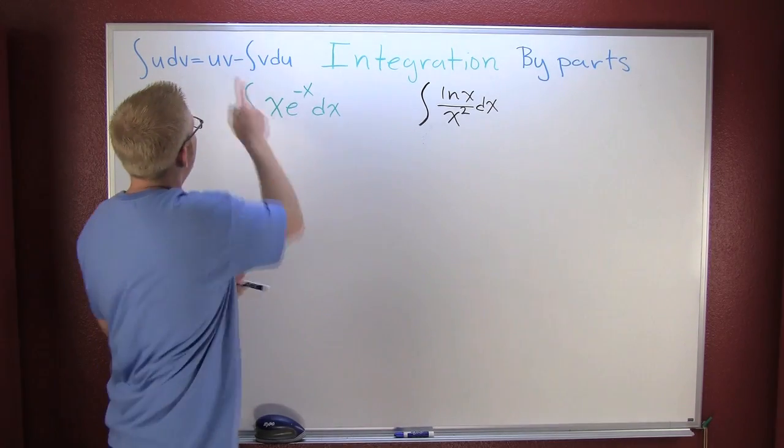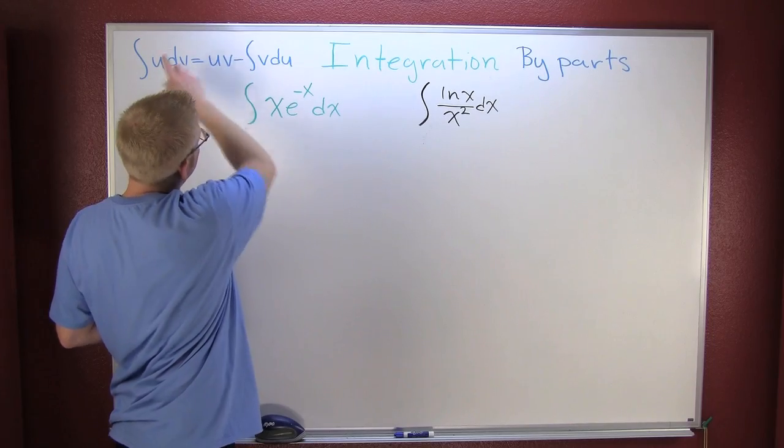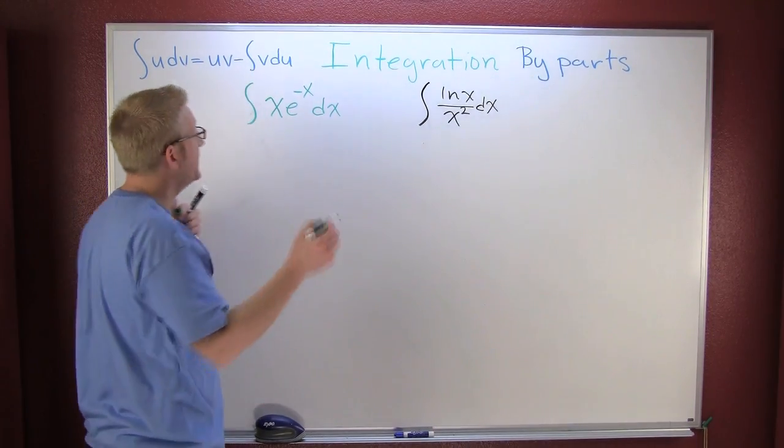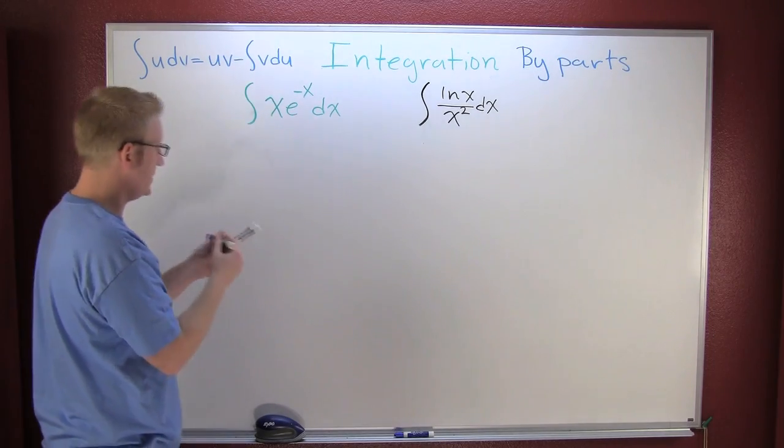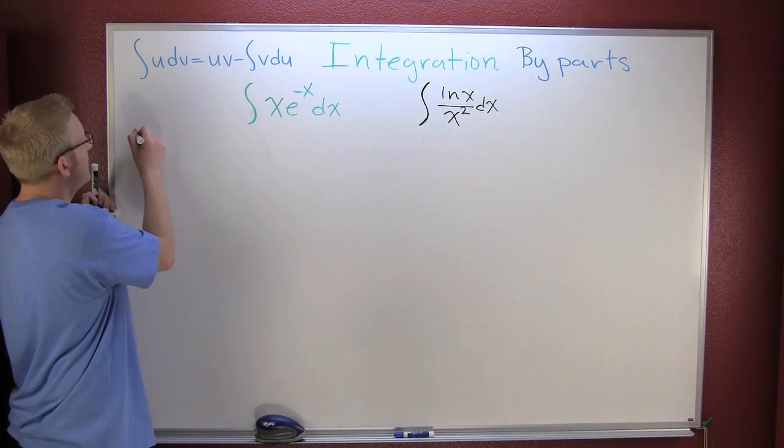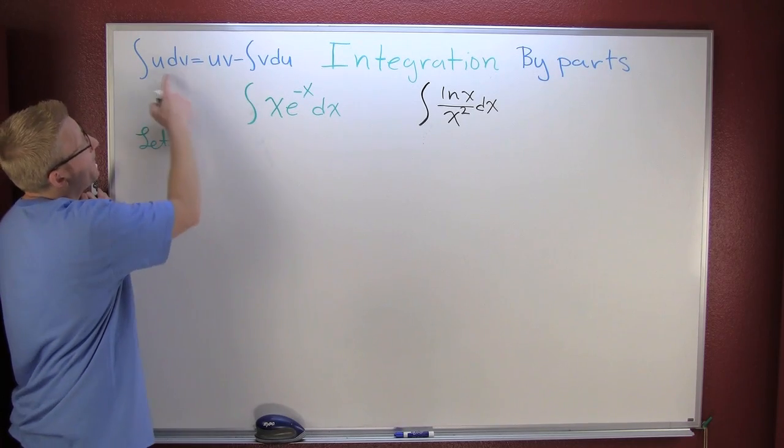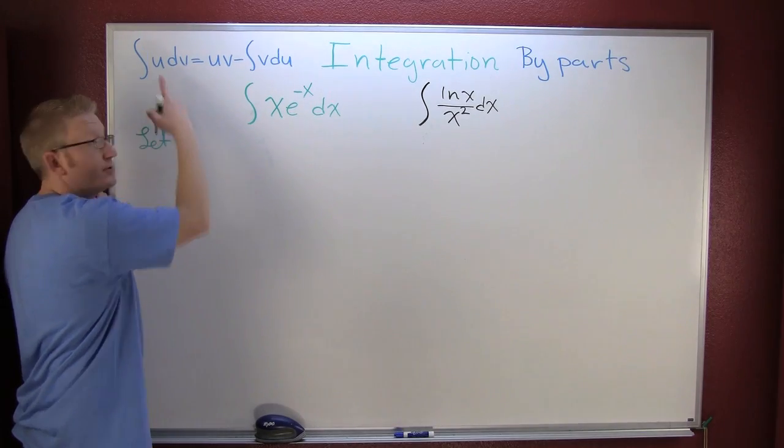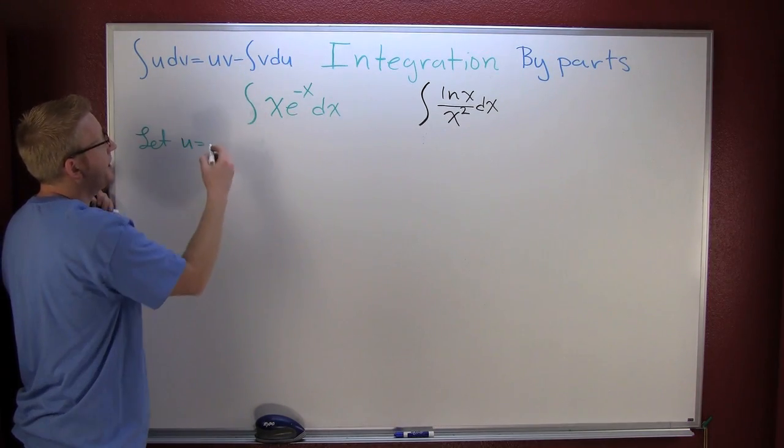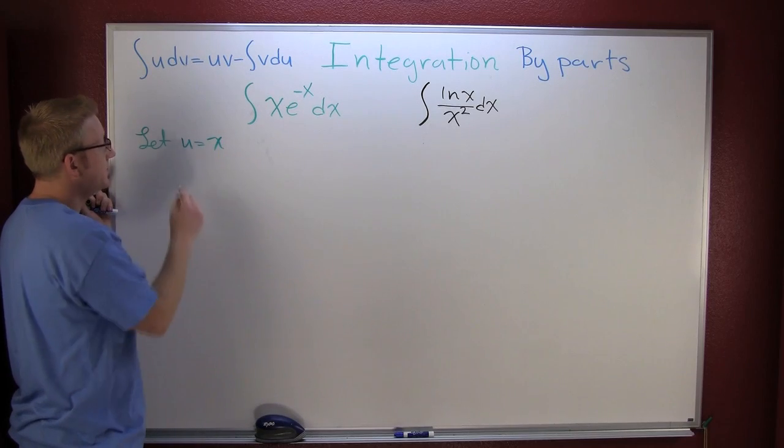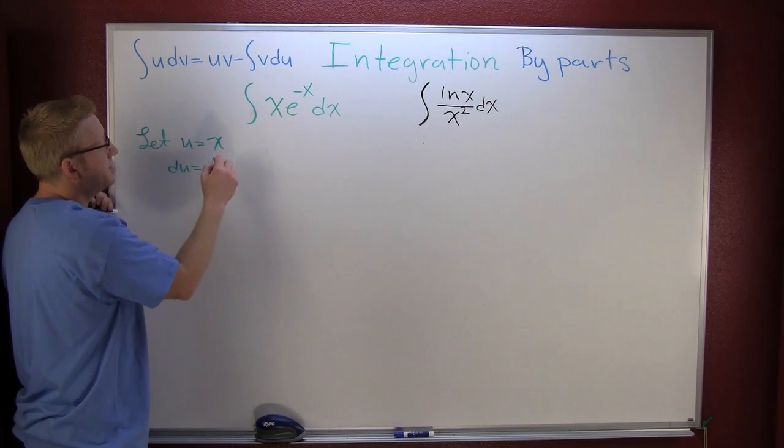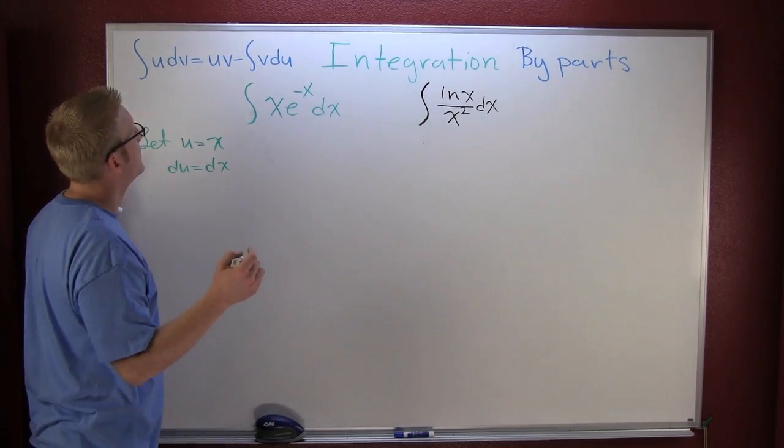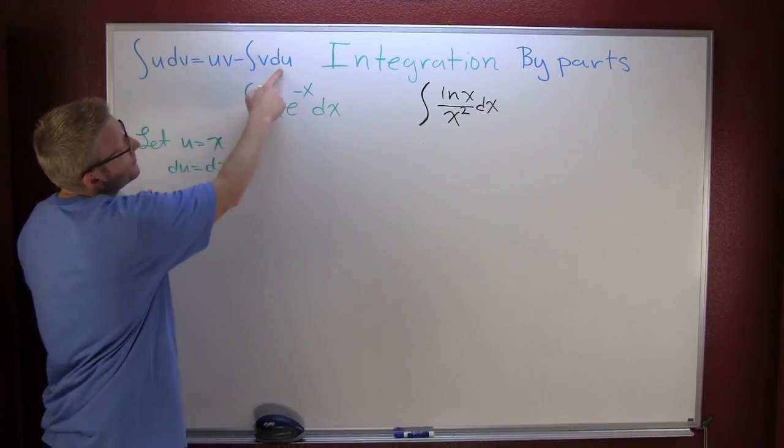So what we're going to try to do is part this up into two pieces, two different functions if you will, one being a derivative and the other one being a function. Here, I'm going to let the u part of my function be something that's easily differentiable. I'm gonna let u be x, so then du is gonna be dx, almost getting rid of it in its entirety.